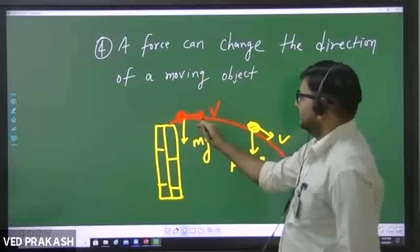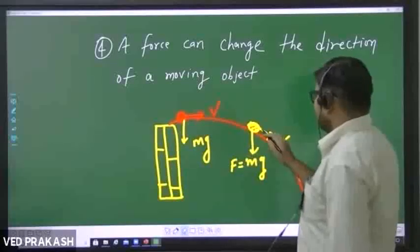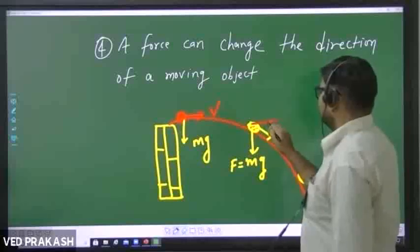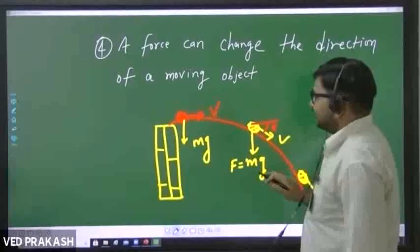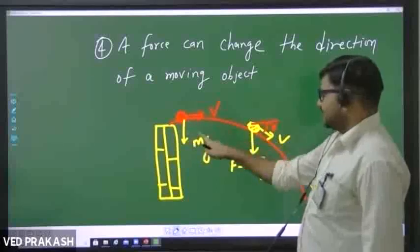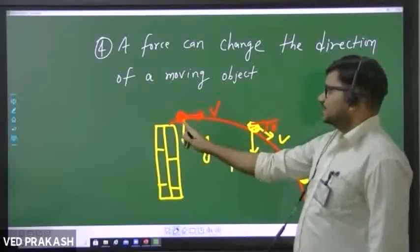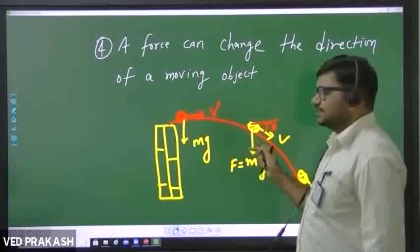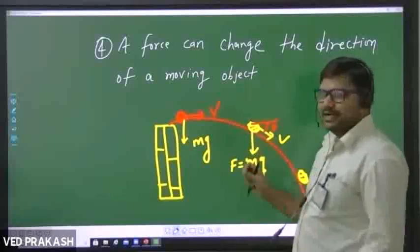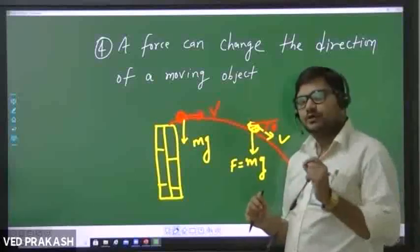Here you can see that velocity is in horizontal direction, and here this velocity is making some angle with horizontal direction. So you can say that by application of this Mg force, the direction of motion of this ball is changing. A force can also change direction of a moving object.